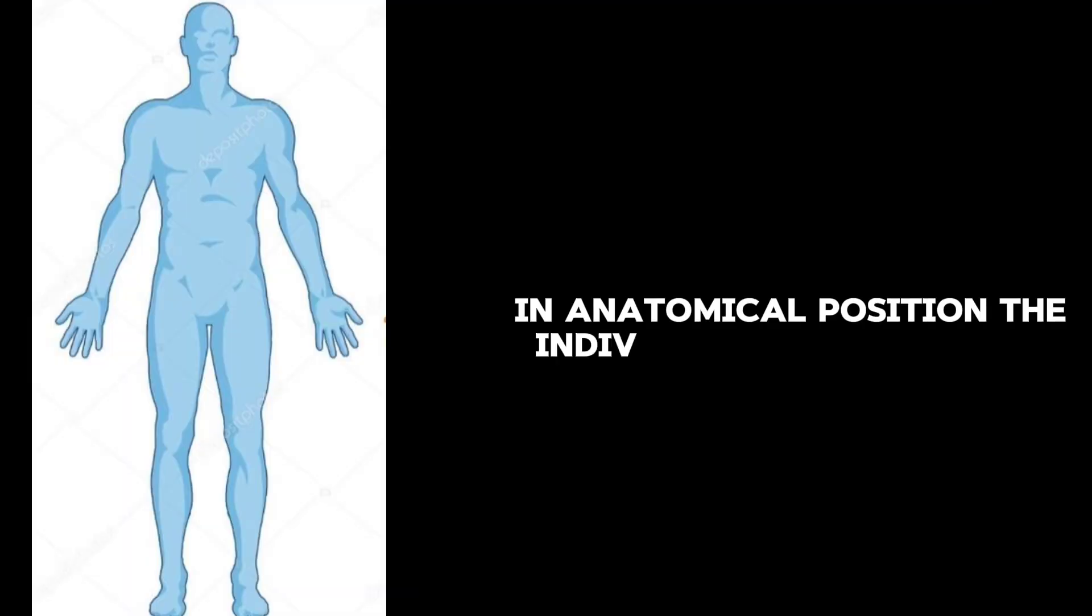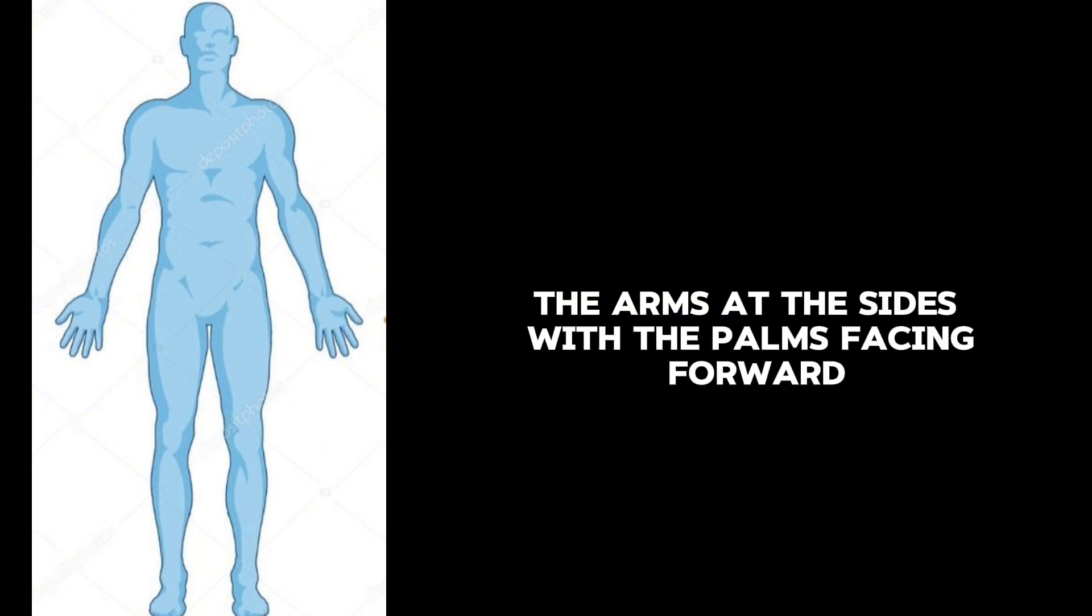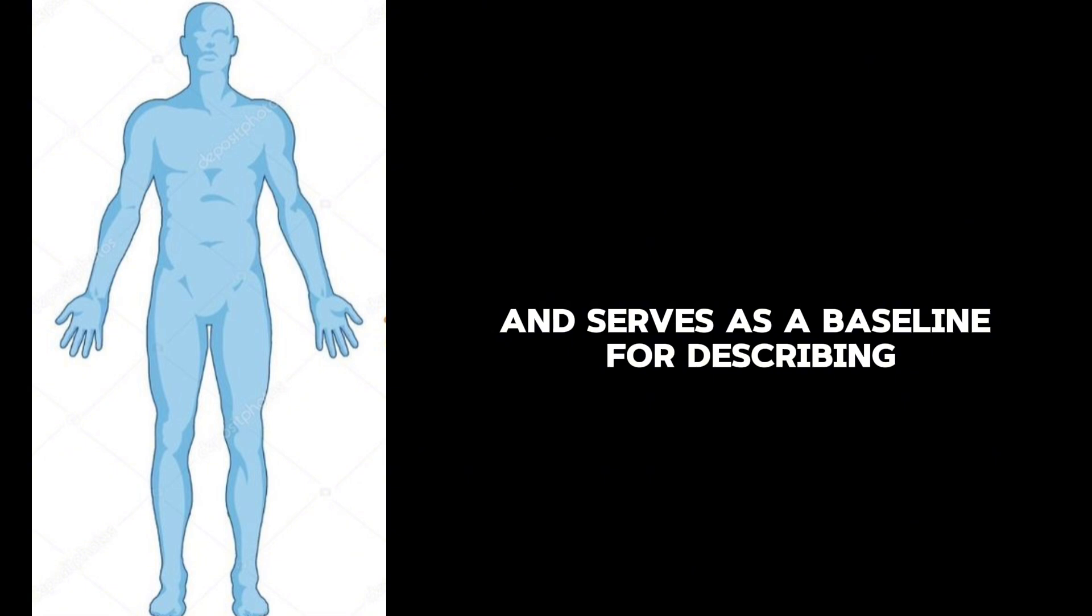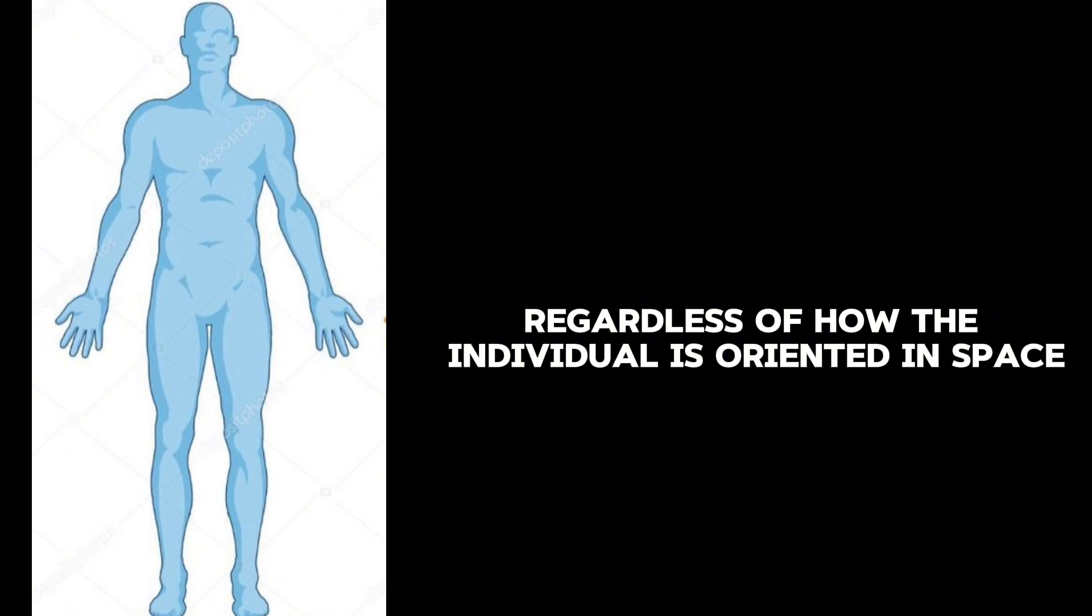So how do you describe an anatomical position? In anatomical position, the individual stands upright, feet flat on the ground and slightly apart, facing forward. The arms are at the sides with the palms facing forward. The head and eyes are directed straight ahead. This position assumes a natural stance and serves as a baseline for describing any part of the body, regardless of how the individual is oriented in space.